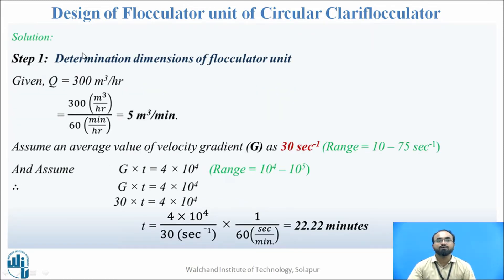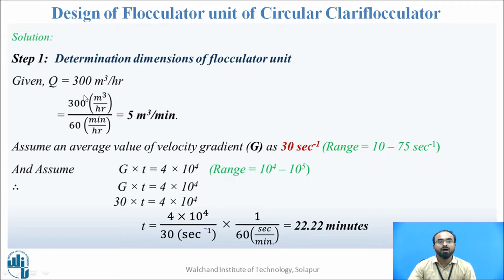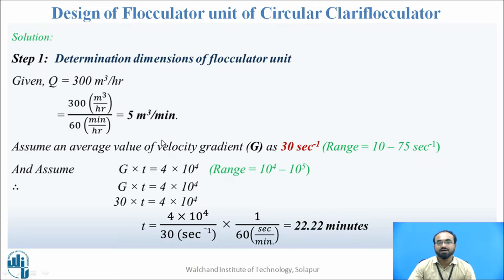First, we find the dimensions of the flocculator unit. We know Q equals 300 cubic meters per hour. We convert it to cubic meters per minute by dividing by 60, giving 5 cubic meters per minute. We assume the velocity gradient G to be 30 per second; it can be taken between 10 to 75 per second.